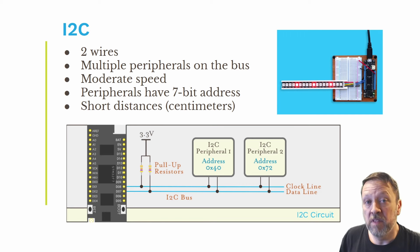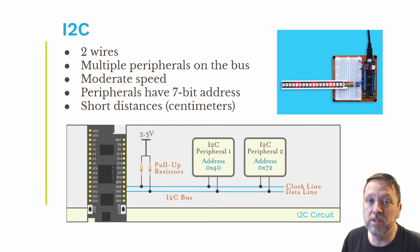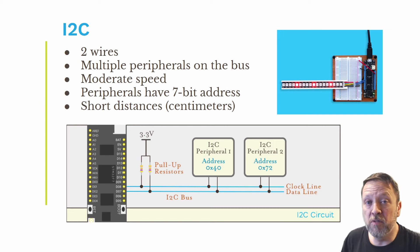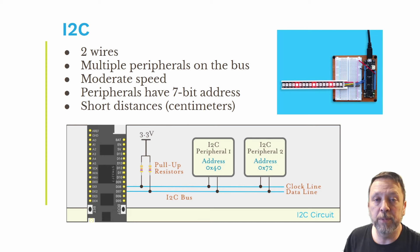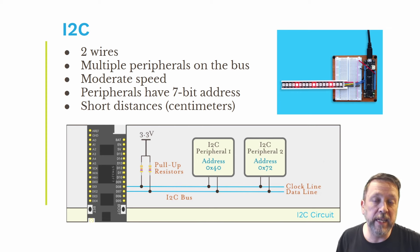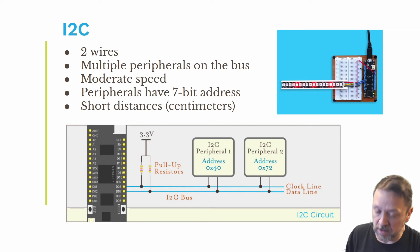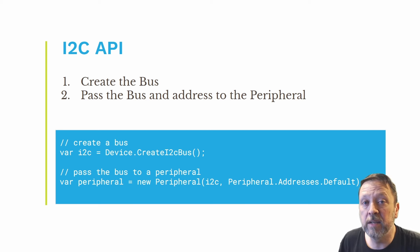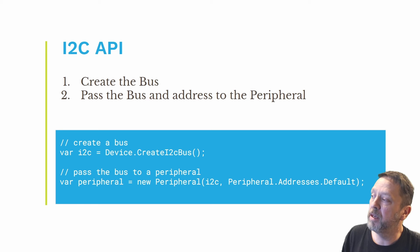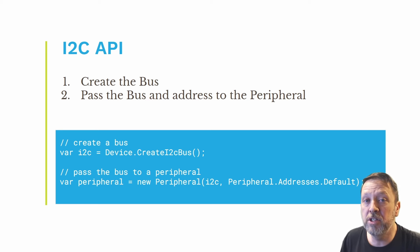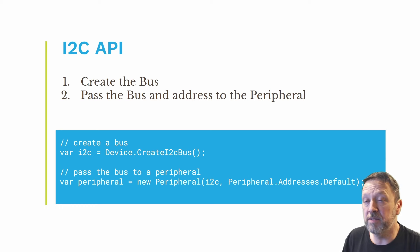For I2C, this is a two-wire bus, so you can have multiple peripherals on the bus. They're all addressed with a seven-bit address, so as long as you don't have address collision, you can have many different devices on the bus. These are good for short distances — think centimeters at the most, typically things all inside one enclosure — from your platform hardware to, say, a temperature sensor or a light sensor. Just like most things in MeadowCore, you just create the bus, and then you pass that bus and the peripheral into your hardware driver. Accessing I2C is really simple: you create the bus using the device, and then you pass that bus and the address into your peripheral driver.